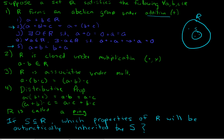Likewise, additive inverses will also not be automatically inherited. Let's say here's our element — we know it does have an additive inverse in R because R is a ring, but there's no guarantee that that additive inverse is also in S. If the elements of S are chosen at random, there's no guarantee that an element and its inverse are both going to be in there.